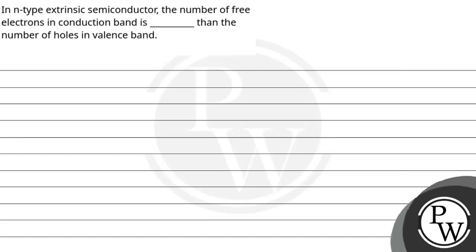Hello, let's see the question. The question says, in n-type extrinsic semiconductor, the number of free electrons in a conduction band is dashed than the number of holes in the valence band. So, this question is going to be a key concept.